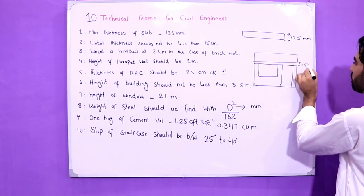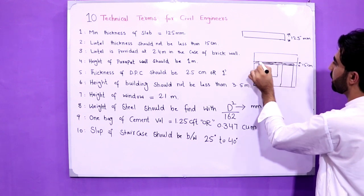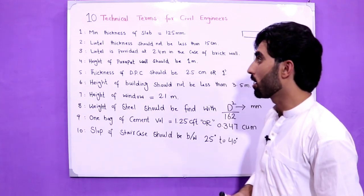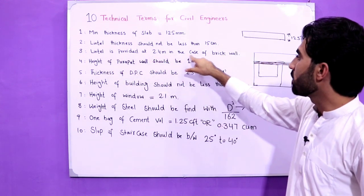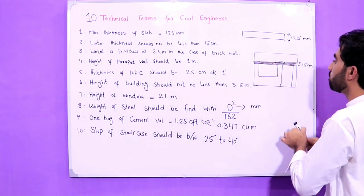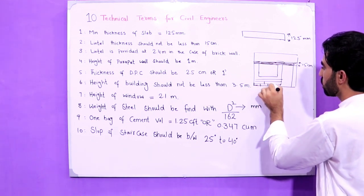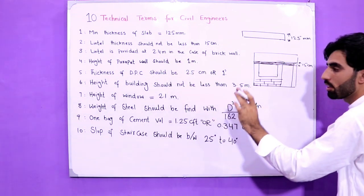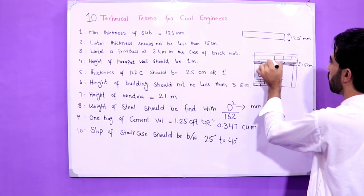Now the third technical term is lintel is provided at 2.5 meter in the case of brick wall. In the case of brick wall, if this is brick wall, so the lintel should be provided at 2.4 meter in the case of brick wall. For example, this is brick wall in the case of brick wall.